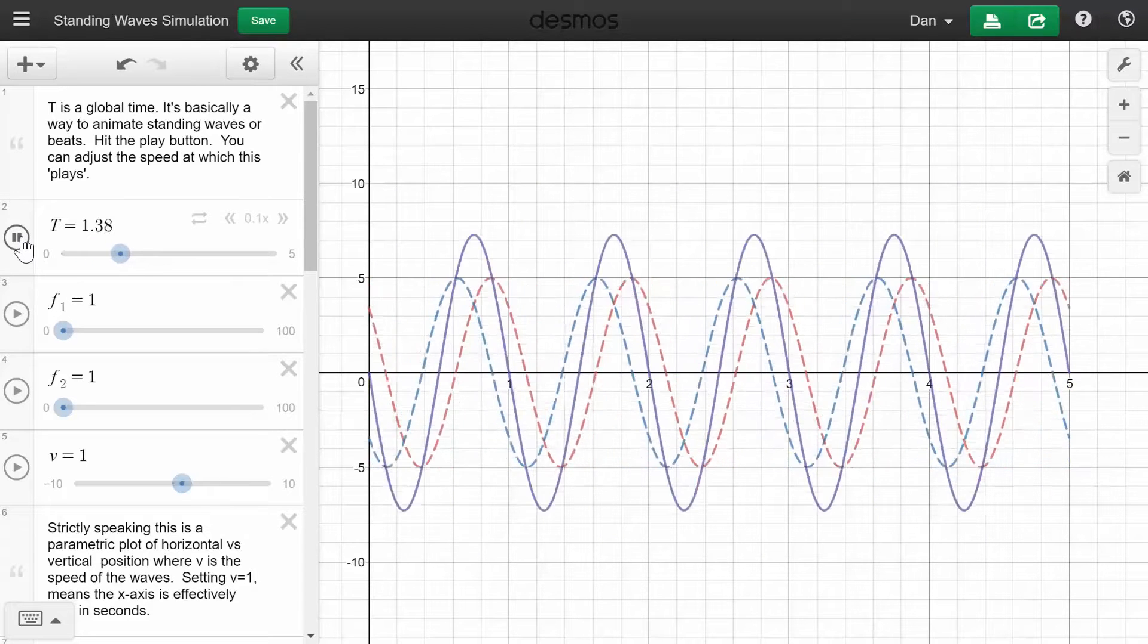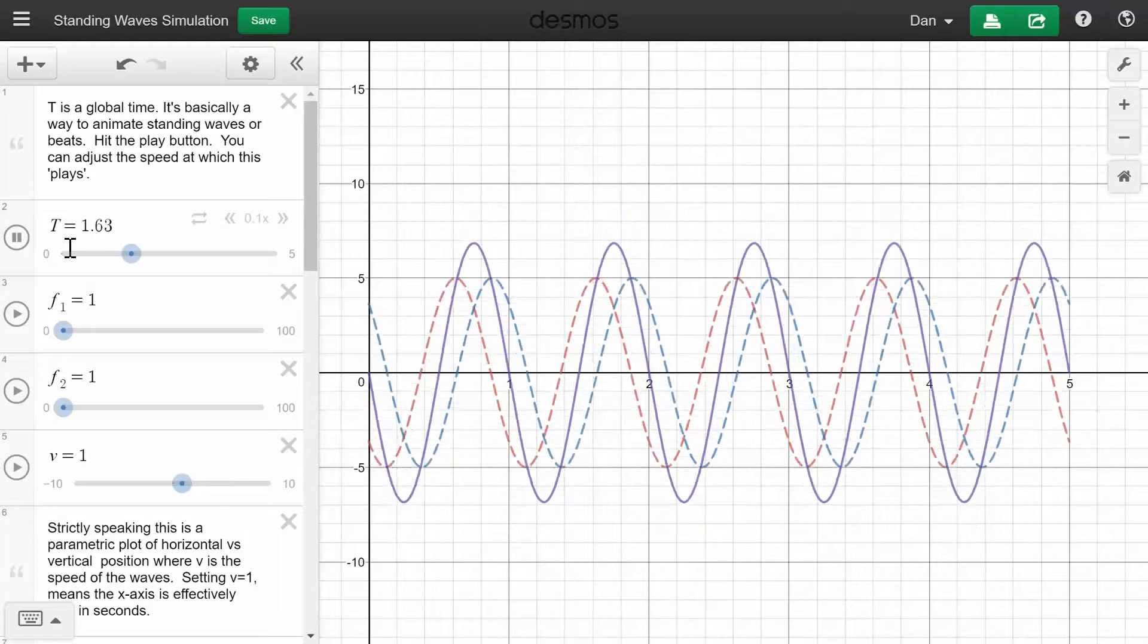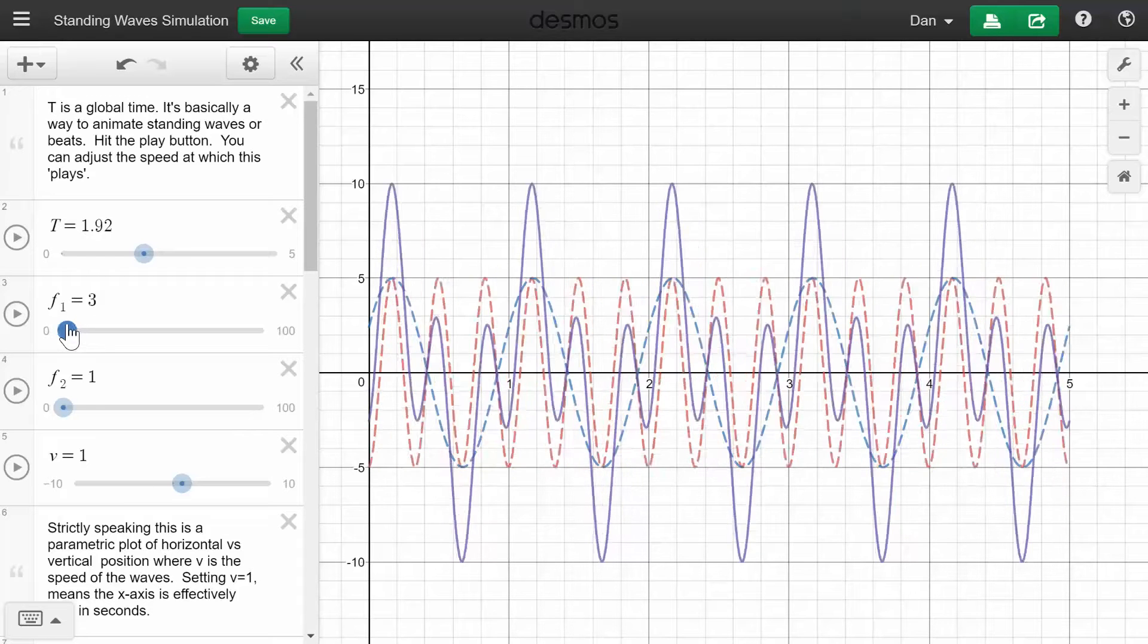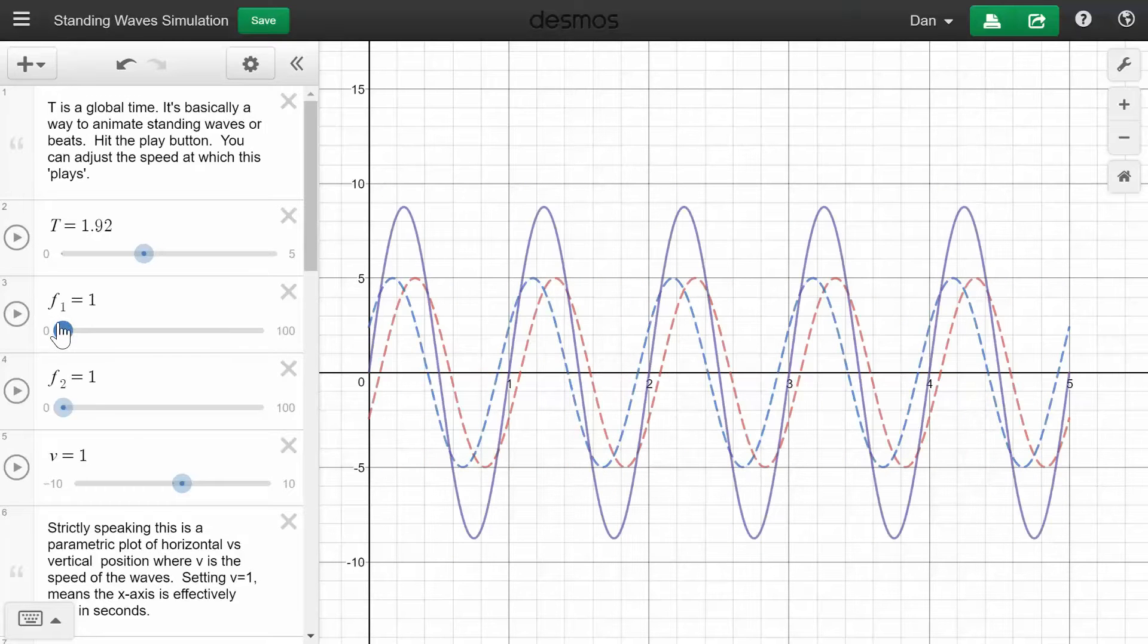What I've done in Desmos is made an overall or a global time variable, T. And you can adjust the frequency of each. Let's just leave that at one for now.